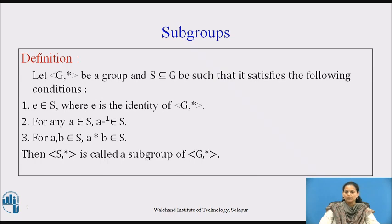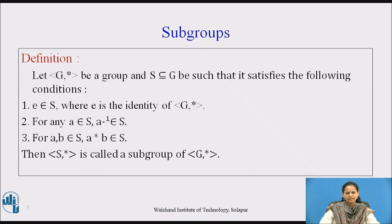On the same line as we have defined a sub-semi-group and a sub-monoid, we have also come out with a definition for a subgroup. The additional conditions for any subset of a given group to be a subgroup are: the identity element must be present in the subset; each element as well as its inverse must also be present in the same subset; and if you take any two elements, the result of the operation performed on those two elements must also be present in the same set.